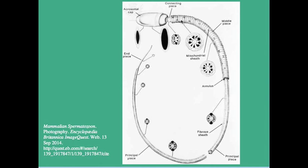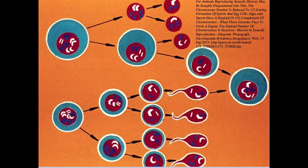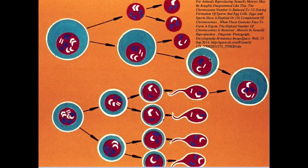In the female reproductive system, similar events occur, but instead of producing millions of gametes, an adult female will produce approximately 400 viable gametes or ova in her lifetime. These primordial follicles are present at birth, and at puberty only one viable egg is released per month. Here meiosis is once again involved to produce gametes with the haploid number of chromosomes, or half the number of a regular diploid cell, but only one of the four haploid cells is a viable gamete or ovum. The remainder have less cytoplasm and will degenerate.